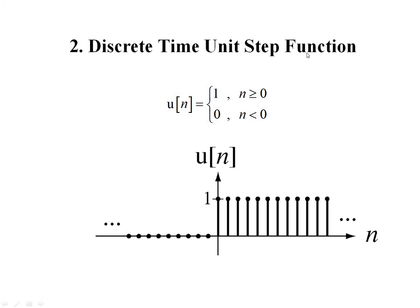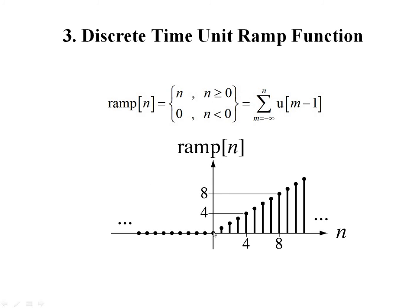Next is the discrete time unit step function. The difference from continuous is that it is defined only at integer values of n: 0, 1, 2, 3 and so on. u(n) takes value 1 for all positive values of n and 0 for all negative values. The unit ramp function r(n) = n for n ≥ 0. So for n = 0 the value is 0, for n = 1 it is 1, for n = 2 it is 2, for n = 3 it is 3, for n = 4 it is 4, and so on — it is a linear waveform.